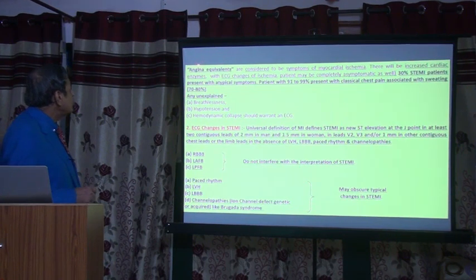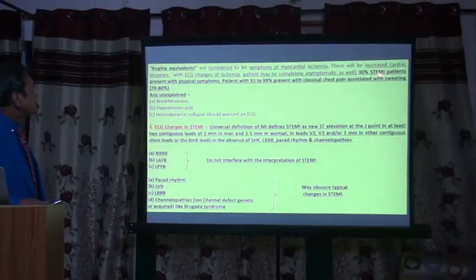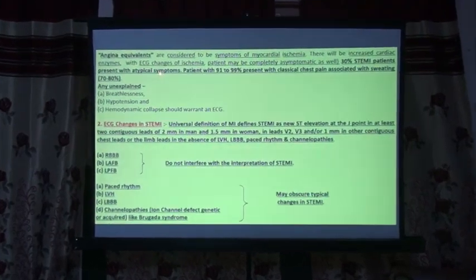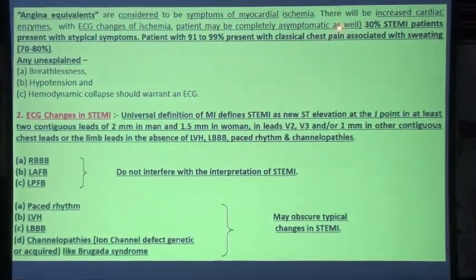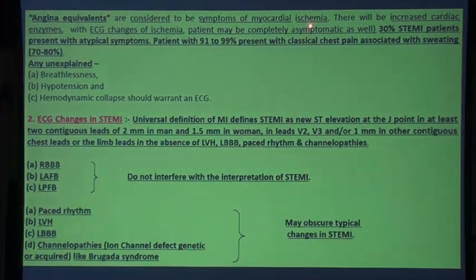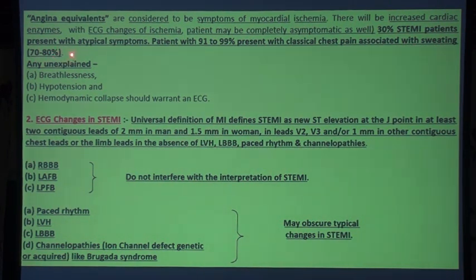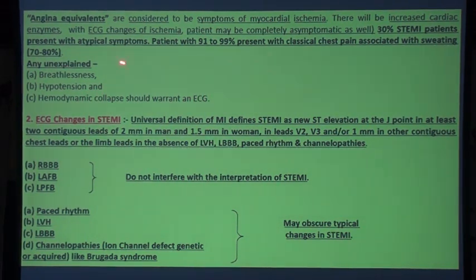Angina equivalents — an important question in DM cardiology — are considered to be symptoms of myocardial ischemia. There will be increased cardiac enzymes with ECG changes of ischemia. The patient may be completely asymptomatic as well. Sometimes 30% of STEMI patients present with typical symptoms. In 91 to 99% there is classical chest pain associated with sweating. In 70 to 80% there may be unexplained breathlessness or hypertension. Hemodynamic collapse should also warrant an ECG.